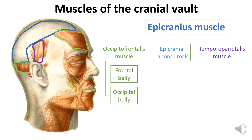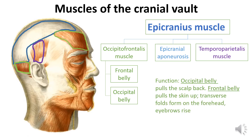The temporoparietalis muscle is the lateral part of the epicranial muscle. It begins on the inside of the cartilage of the auricle, where it is formed, and attaches to the epicranial aponeurosis. The occipital belly pulls the scalp back, creating support for the frontal belly. The frontal belly pulls the skin up, forming transverse folds on the forehead. The temporoparietalis muscle is rudimentary.